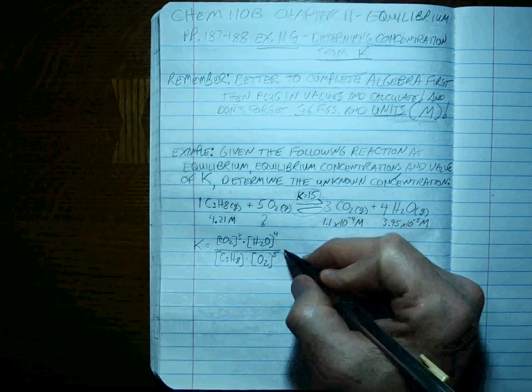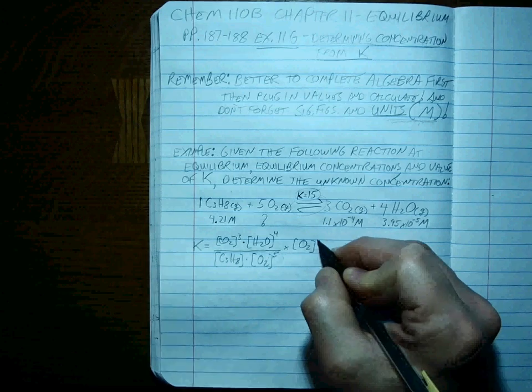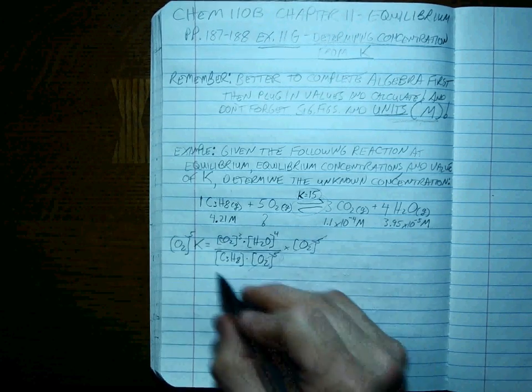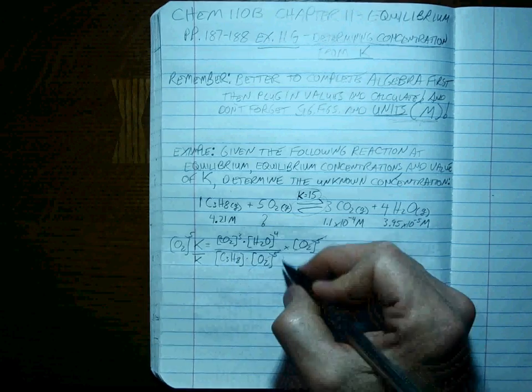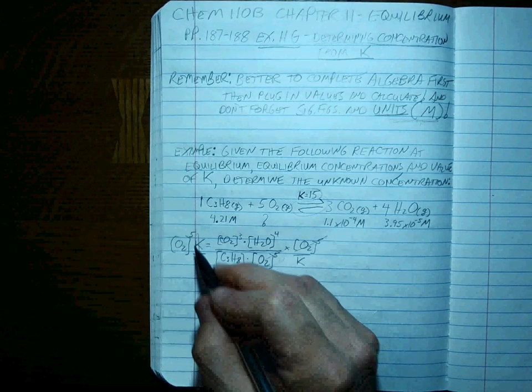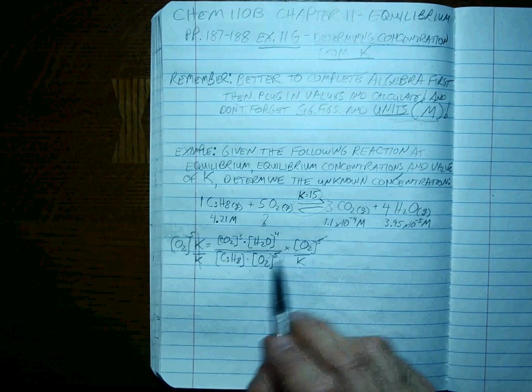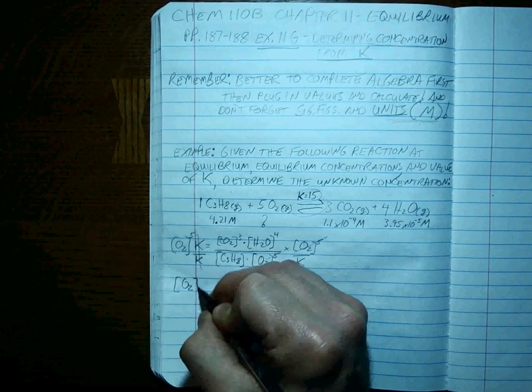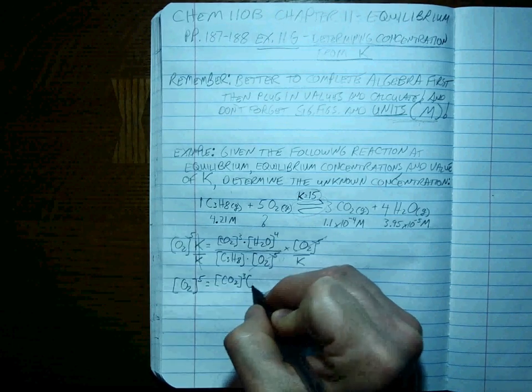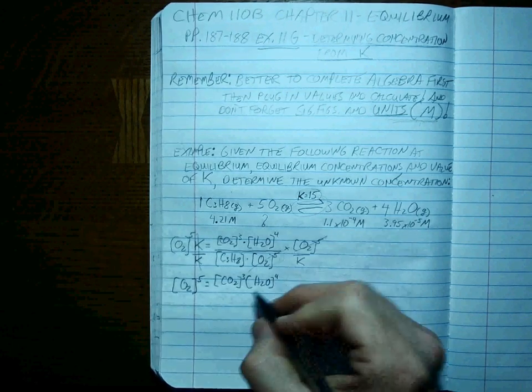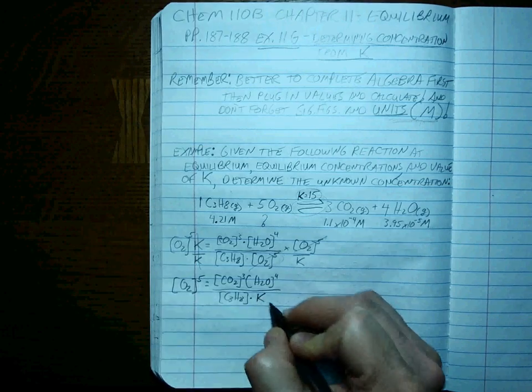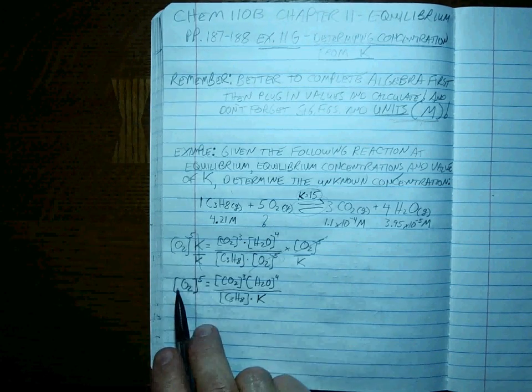So let's do the algebra to solve for this. How would you do that algebra? It's in the denominator, right? So let's multiply both sides to get it up into the numerator, and let's divide both sides by K to get that isolated. Because K over K is equal to one, and O2 to the fifth divided by O2 to the fifth is one. So what's left? The O2 concentration to the fifth power is equal to the CO2 cubed and the H2O to the fourth, divided by the C3H8 times K.